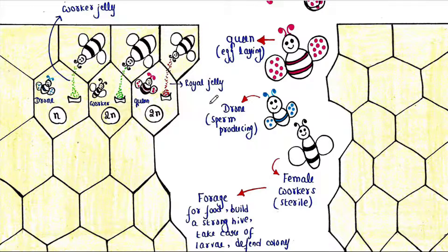Each colony or hive of honeybee contains three adult castes. First is the queen - she is the egg-laying queen. And drones - they are sperm-producing male honeybees. And workers - who are female but non-reproductive because they are not able to produce gametes. They are sterile.